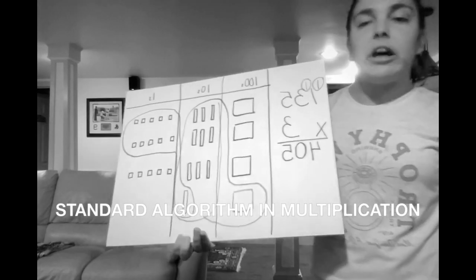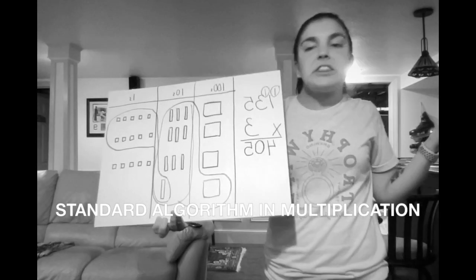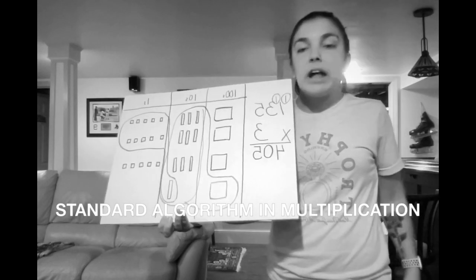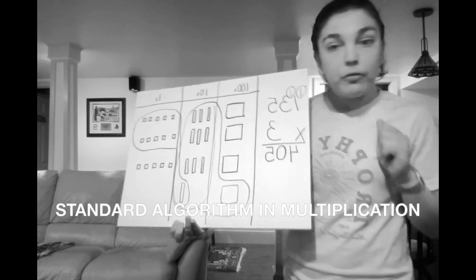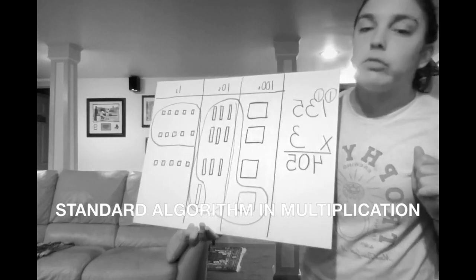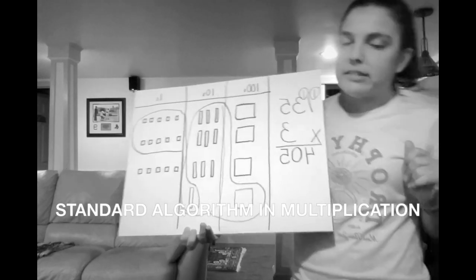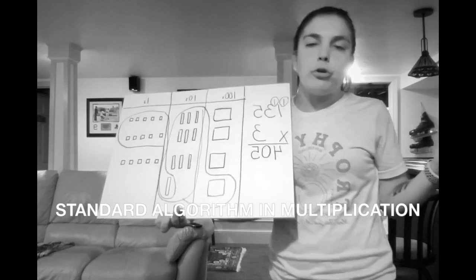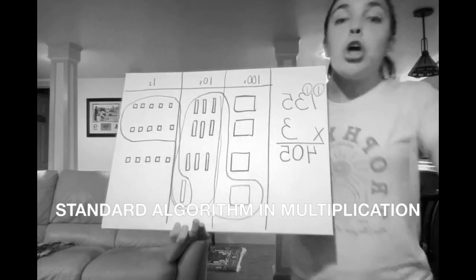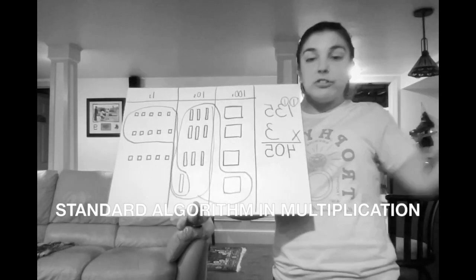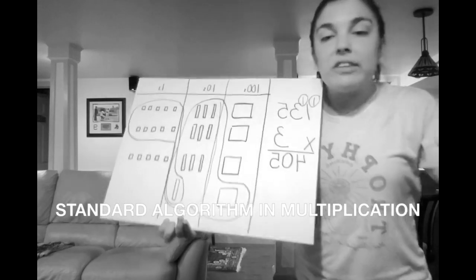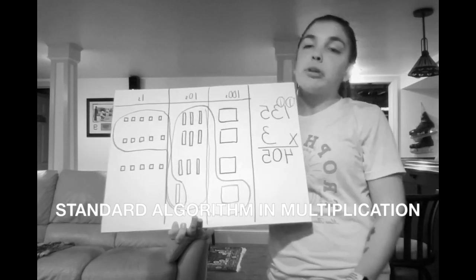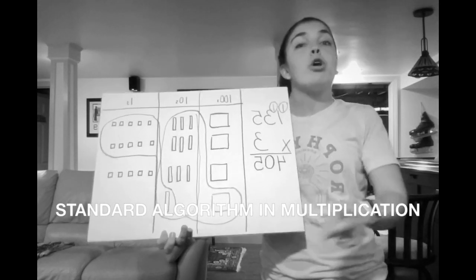Almost done — if you've got a thousand, this is your last step: multiply those thousands, but don't forget to add those extra thousands. And if you've got more than 9,099, you know what to do. Now see, the standard algorithm lets you multiply way more quickly.